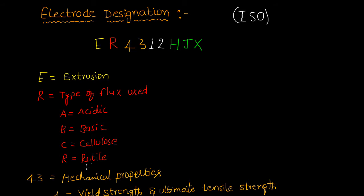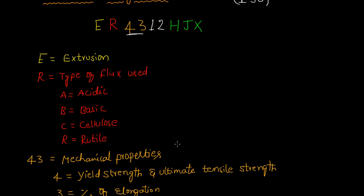The next two letters are joined and represent the mechanical properties of the joint. The first number, 4, indicates the yield strength and ultimate tensile strength of the joint. The 3 indicates the percentage elongation, as usual in BIS designation.